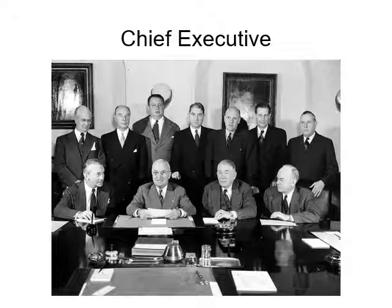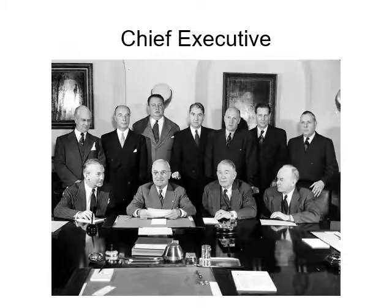As Chief Executive, the President appoints the Secretaries of the Cabinet, the 15 Departments of the federal government, and the heads of other federal government agencies. He oversees a bureaucracy of over 4 million employees. And the Constitution obligates the President to see that the laws be faithfully executed.